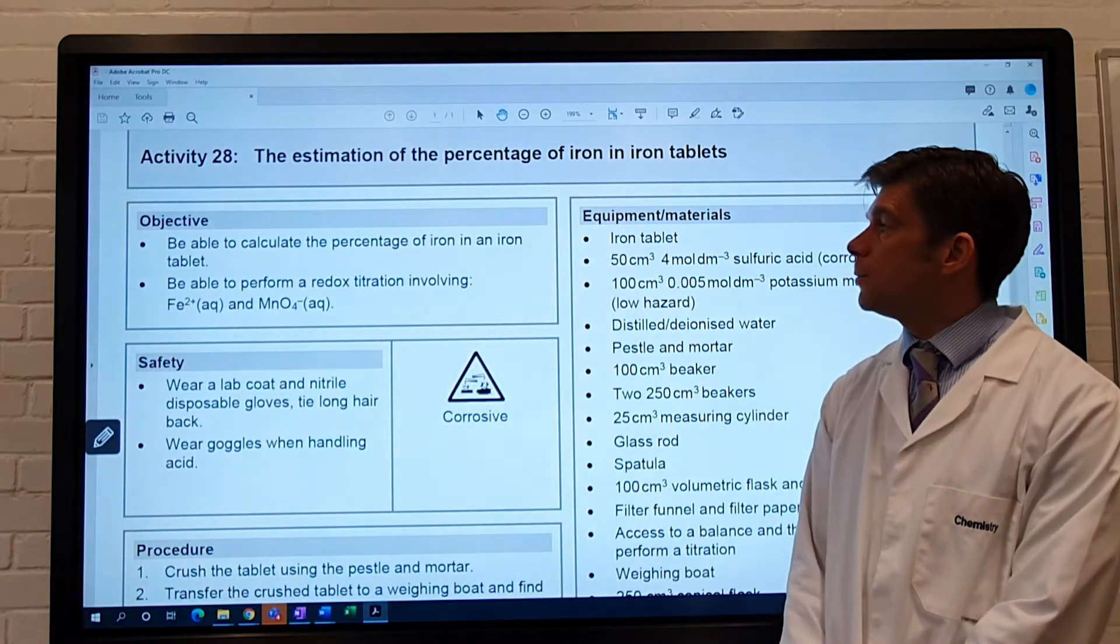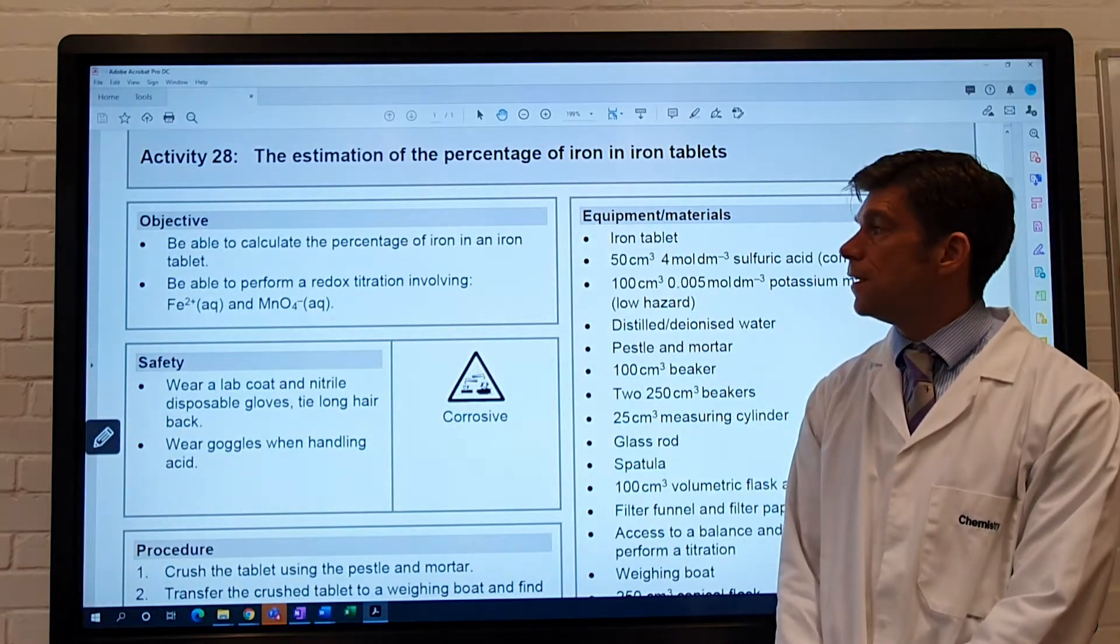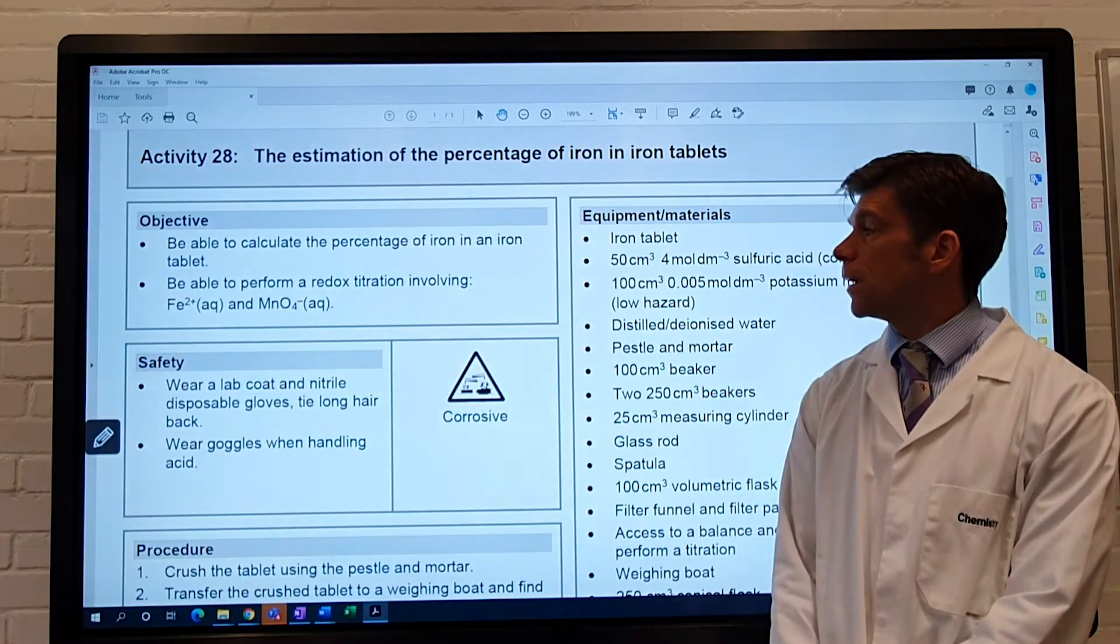The aim of the experiment is to be able to calculate the percentage of iron in an iron tablet, and to perform a redox titration involving iron 2 plus and the manganate 7 ion.